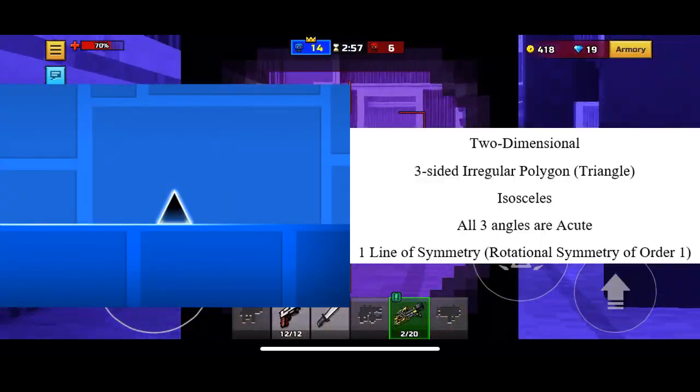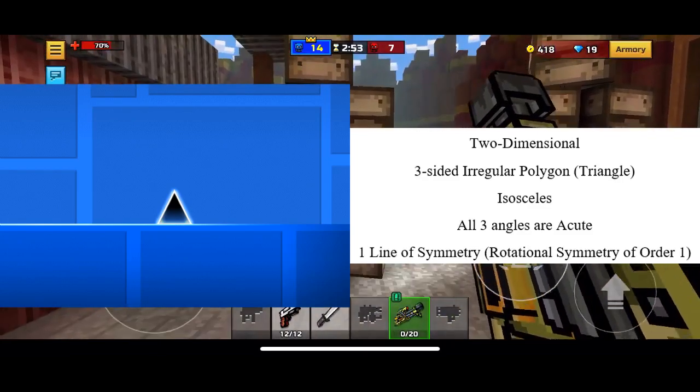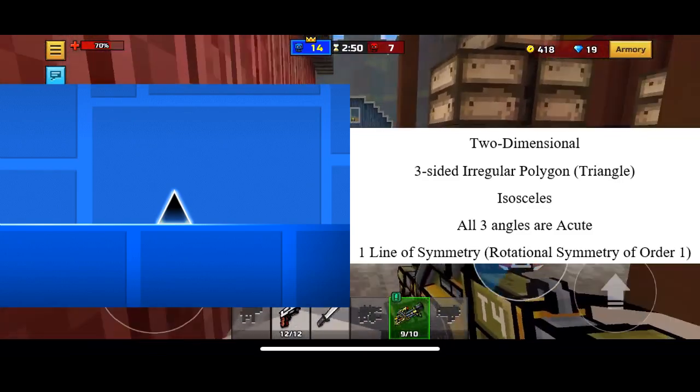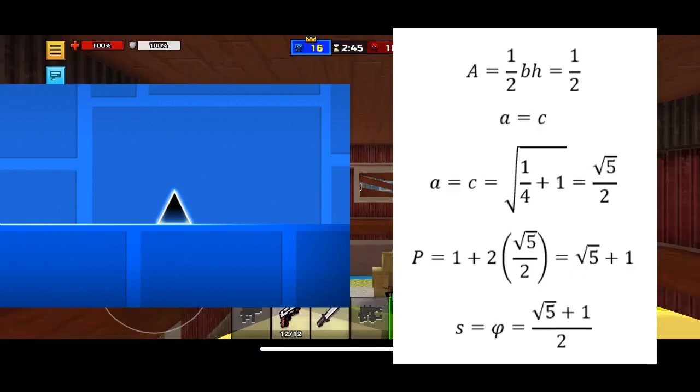The spike is an isosceles acute triangle, therefore it is a two-dimensional irregular polygon. It has one line of symmetry and a rotational symmetry of order 1. It has a base measuring 1 unit and an altitude measuring 1 unit. Its area is 1 half.